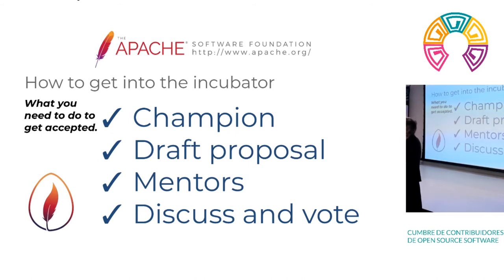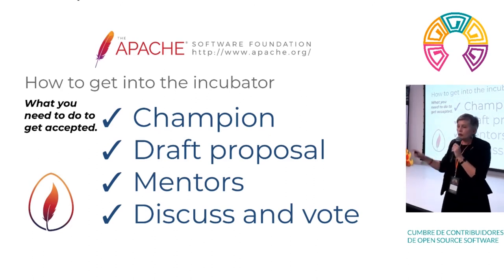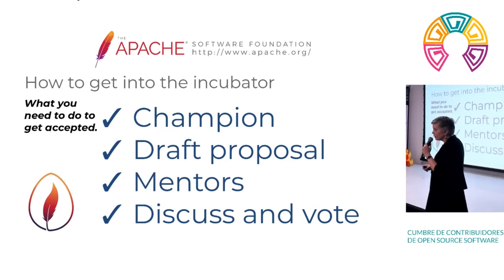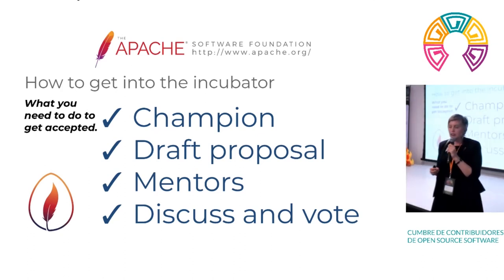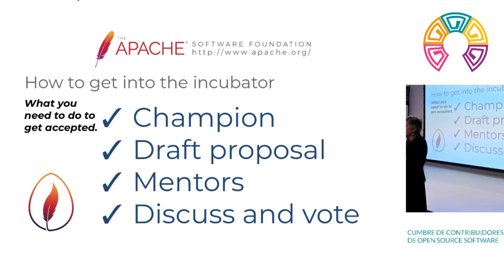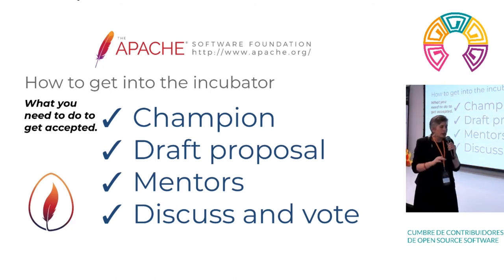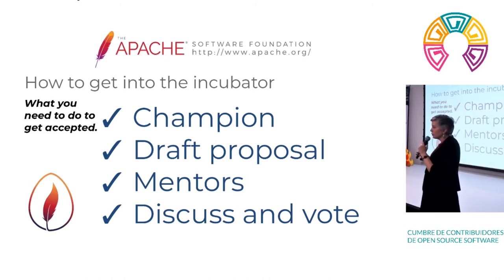There are a couple of things that go into a proposal. One is fairly obvious — what does your project do? For example, Joan showed us each project has a short description of what it's for. Your draft proposal also needs to include who your contributors are, who you're bringing in. It also needs to include what challenges you think you'll have to overcome in the process of becoming a top-level project — what licensing issues you'll need to fix, what community issues you may need to work on. Maybe your project is coming from contributors from all one company and you want to expand to other companies or countries. You need to list the challenges you think you need to overcome.